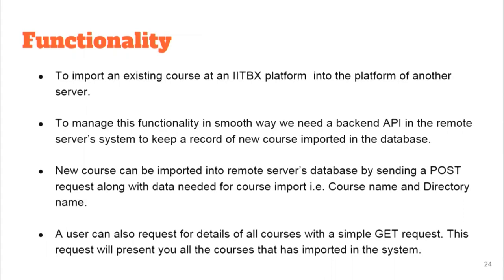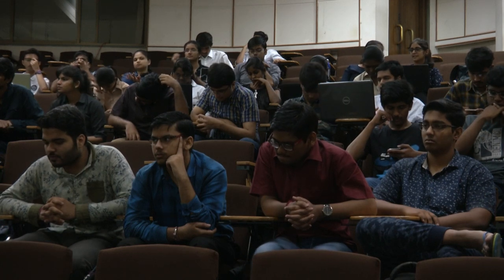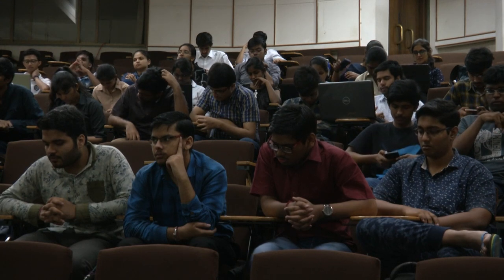The course import API imports an existing course from one platform to another. Using the get function we retrieve data already in the course import API's database, and using post we insert data — the course name we're importing and the directory where we're cloning. There's also a status attribute showing whether that course has been cloned or not.